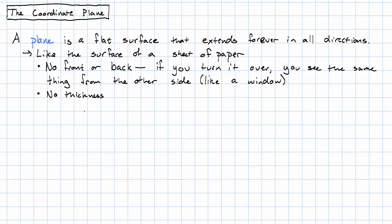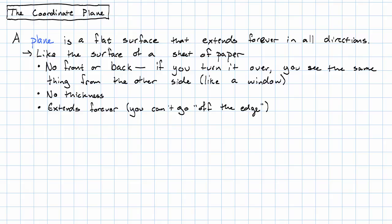A plane also has no thickness. A piece of paper is very, very thin, but it has some thickness. A plane doesn't have any thickness at all. And a plane extends forever — there's no going off the edge of a plane, you just keep going forever and ever. If you're drawing something in a plane and you find that you're going off the edge of a piece of paper, it's because you were drawing too close to the edge. The plane itself doesn't have an edge. Of course, we're only going to be interested in drawing in a little piece of a plane, so typically our drawings will fit on a piece of paper.